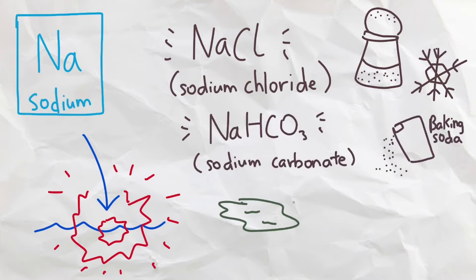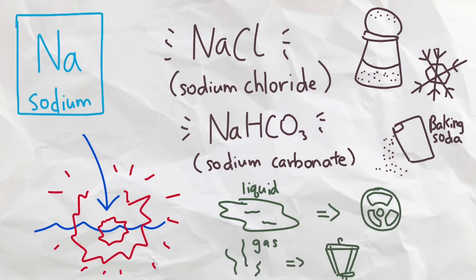Liquid sodium exchanges heat in nuclear reactors, while sodium vapor is used in street lamps to produce the bright yellowish light. Our body also needs sodium, notably to maintain water levels and fire neuron signals through sodium ion channels.